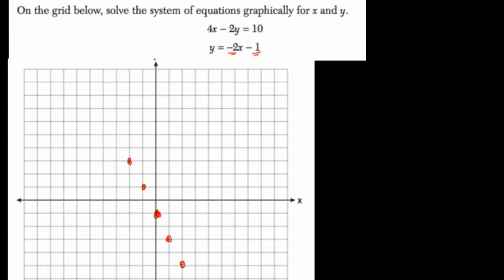Oops, wrong spot. This will do it. Okay. So here is the second line they give us, y is equal to negative 2x minus 1.